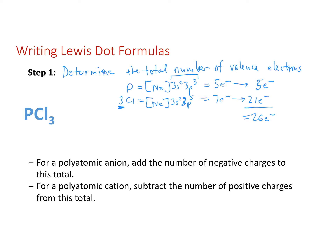If we have a negative charge associated with the molecule, we need to add an electron for each negative charge, and if we have a positive charge, we subtract one. So if we had a minus three, for example, we would add three electrons to the total — one electron for each negative charge.